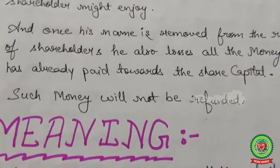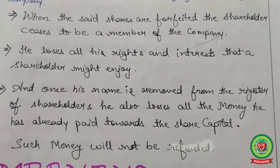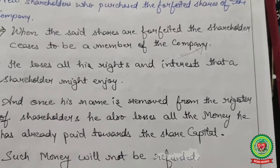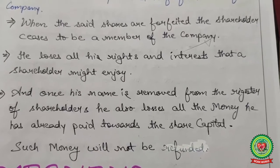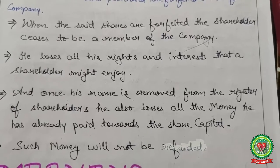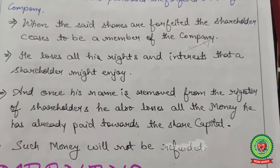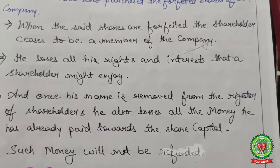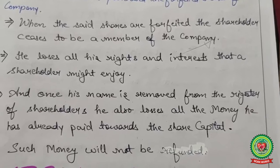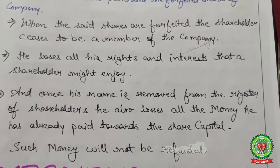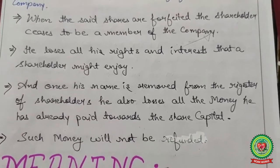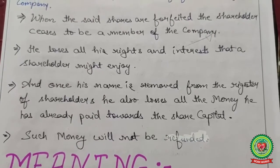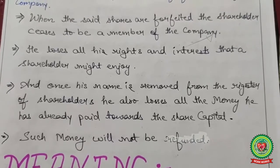Now for your revision: why is forfeiture required? What are the objectives of forfeiture of shares? Forfeiture simply means cancellation of shares. With this, the company registers the new shareholder and removes the name of the old shareholder from the register. Effect number one: when shares are forfeited, the shareholder ceases to be a member of the company — he loses all his rights and interests, and once his name is removed from the register, he also loses all money already paid towards share capital; such money will not be refunded.